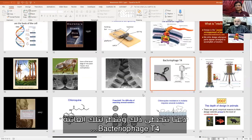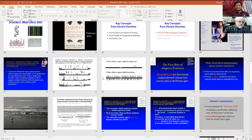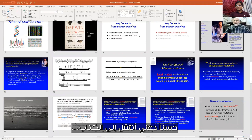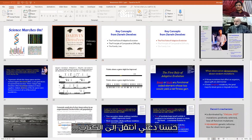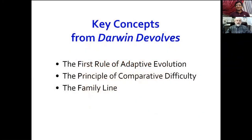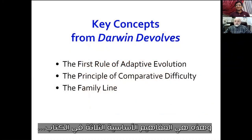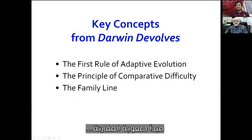This is bacteriophage T4 — just another example of it. Let me skip over to the book. Here's the cover of the book, which just came out a month or so ago. Here are the three key concepts from the book: The First Rule of Adaptive Evolution, The Principle of Comparative Difficulty, and the Family Line.